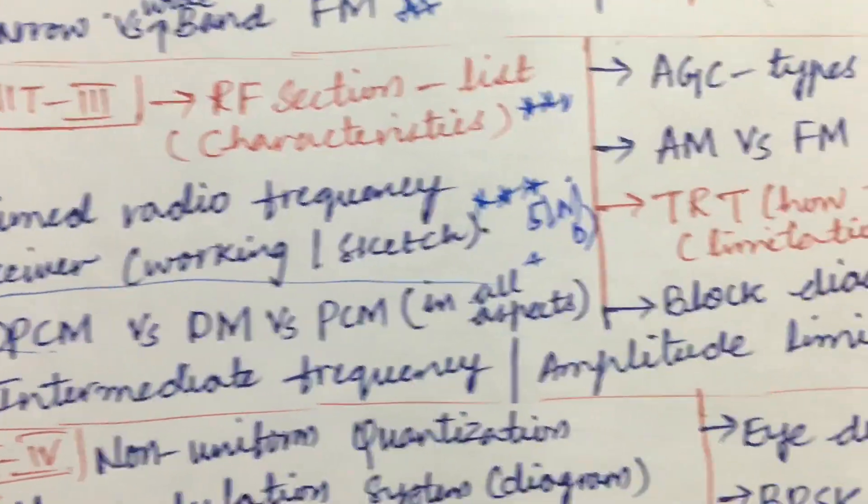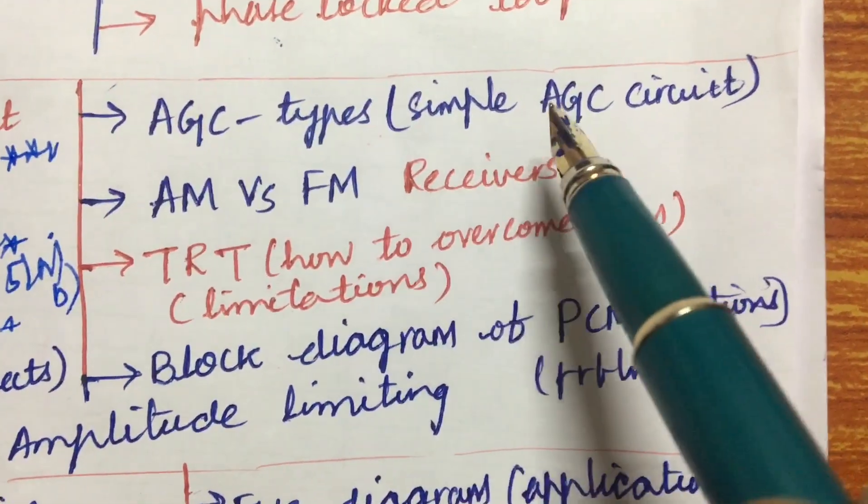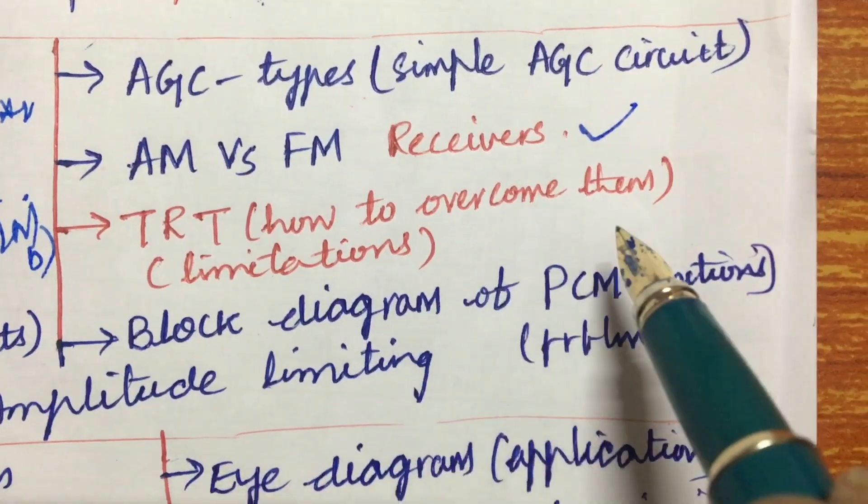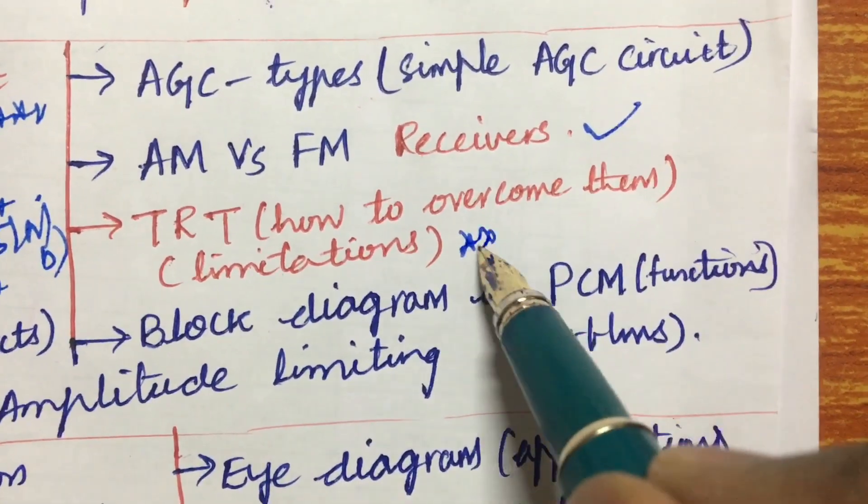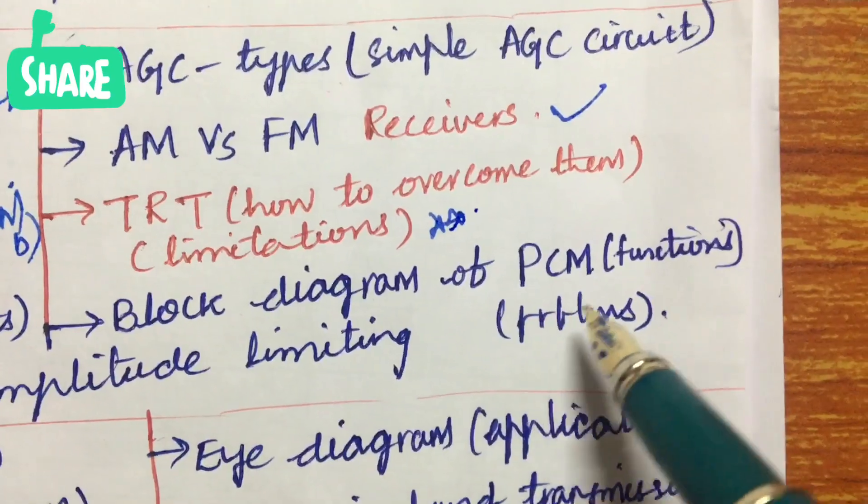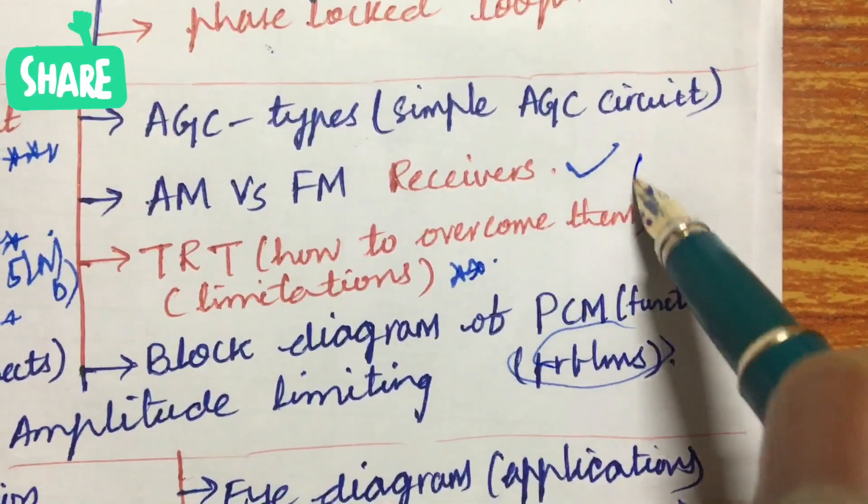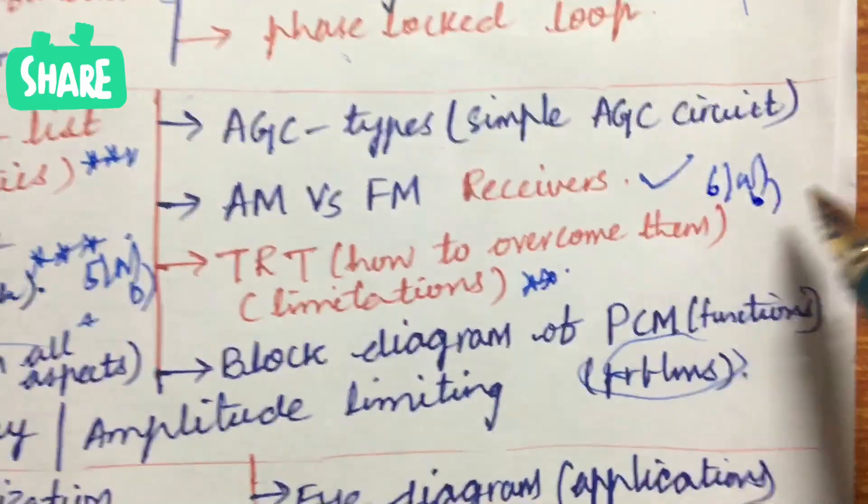Dear students, work out all these concepts. AGC types and simple AGC circuit, AM versus FM receivers, and TRT how to overcome them, and the limitations is also one of the 8 mark questions. And the block diagram of PCM functions as well as certain problems we also cover from this, and this may be the 6A as well as 6B.